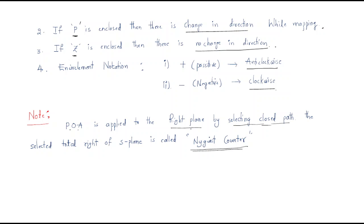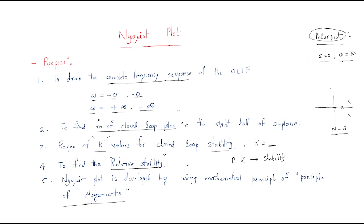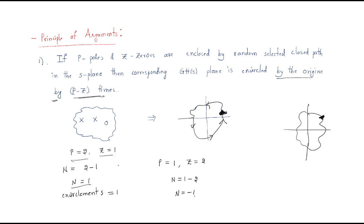The principle of arguments is applied only to the right plane of the selected closed path. When the total right side of the S-plane is selected as the path, it is called the Nyquist contour. This concludes the basics of the Nyquist plot.